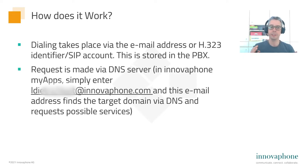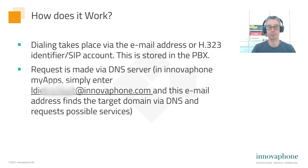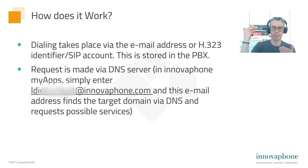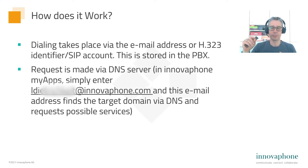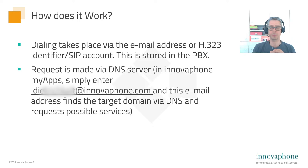You use an email address like ldietrichkeit@innovafone.com, and when you click this in your UC client, the system asks a DNS server on the internet where innovafone.com is. The DNS server forwards the request to the organization on the other side, and then they find the right person.